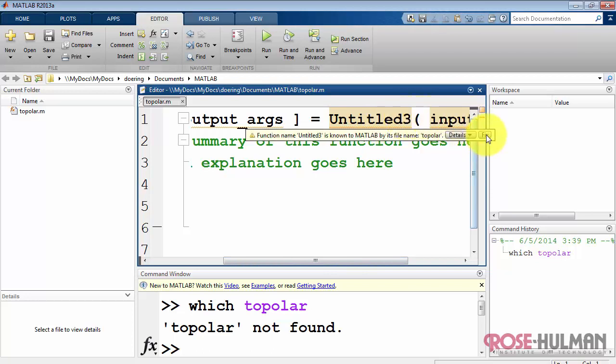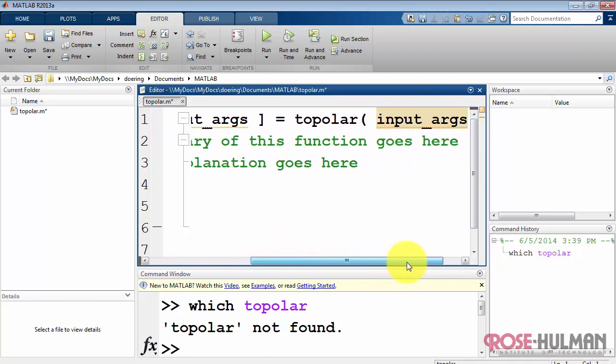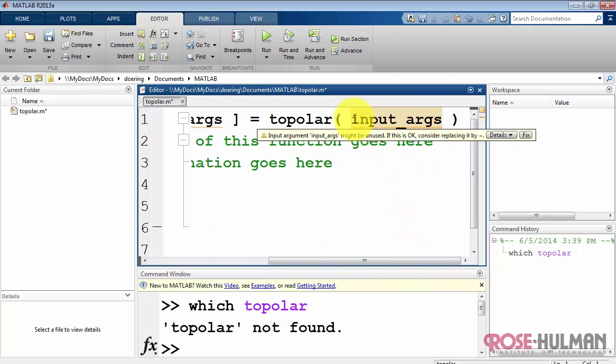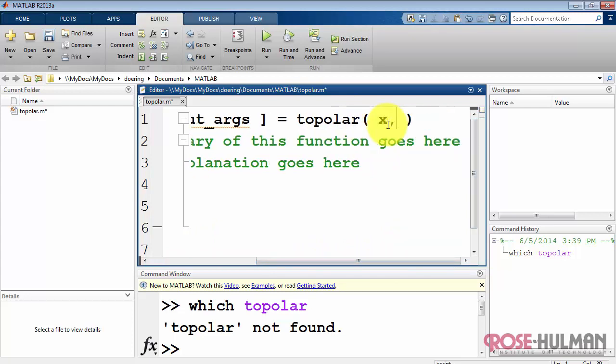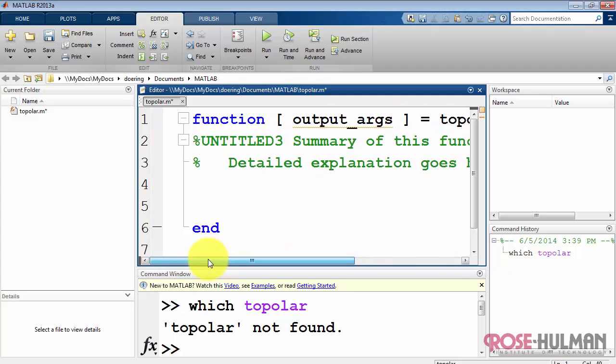First thing I'll do is rename that to toPolar. And toPolar is going to accept two input arguments, X and Y. For the time being, I will just create a single output called R.